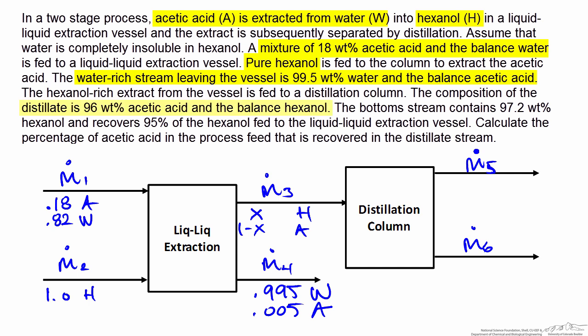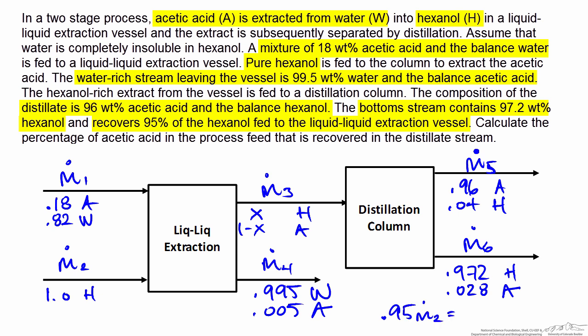We have composition information for both the distillate and the bottoms stream leaving the distillation column. The distillate is 96 weight percent acetic acid with the balance hexanol, and the bottoms stream is 97.2 weight percent hexanol with the balance acetic acid — applied to m5 and m6 respectively. One more piece of information: 95 percent of the hexanol fed to the extraction vessel is recovered in the bottoms stream, represented mathematically as 0.95 × m2 = 0.972 × m6.